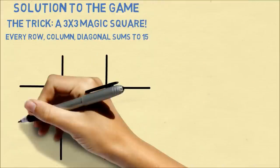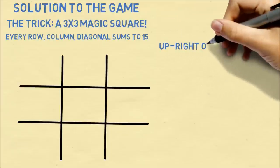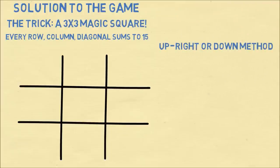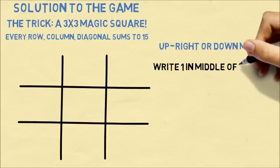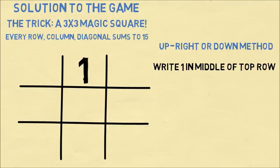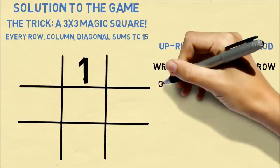So I could just write out the magic square with the numbers 1 through 9, but I'm going to show you how you can generate this. It's a method called the upright or down method. It starts out by writing a 1 in the middle of the top row.